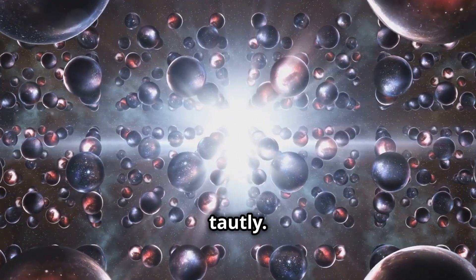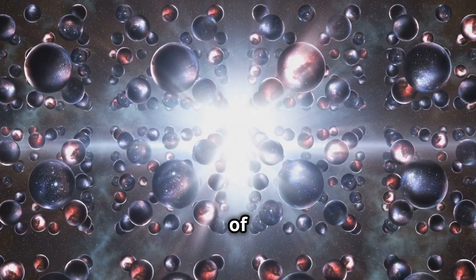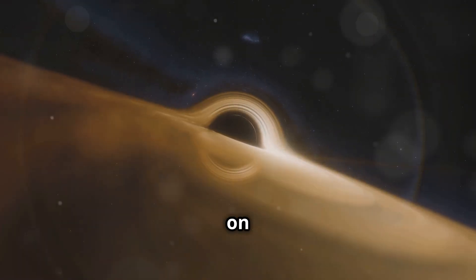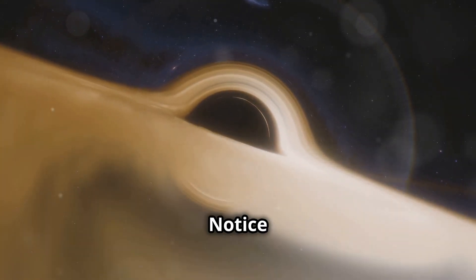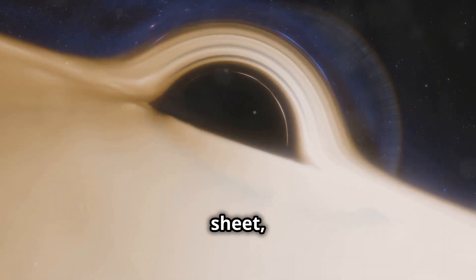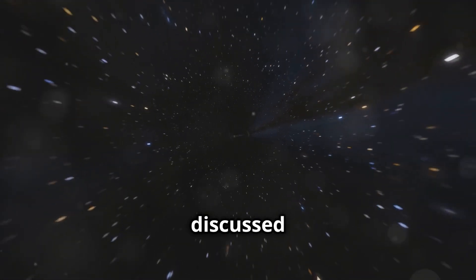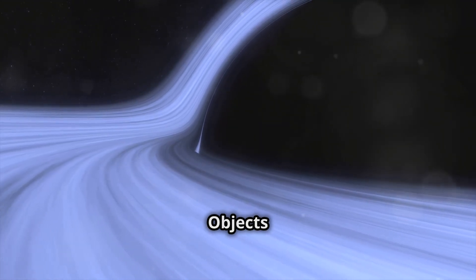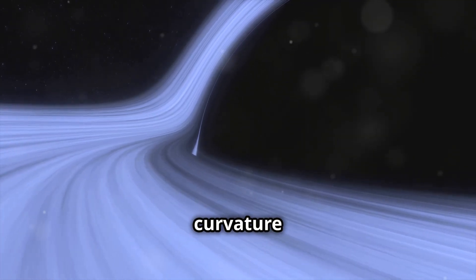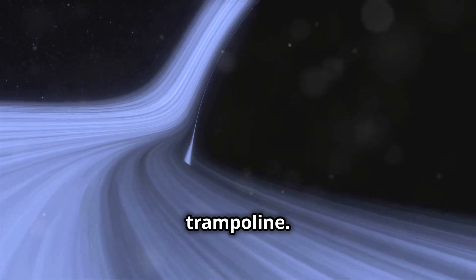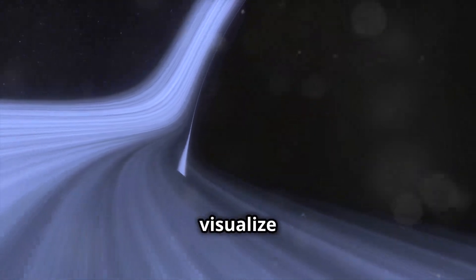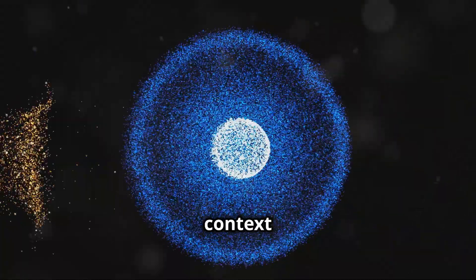Imagine stretching a rubber sheet tautly. This sheet represents the fabric of space-time. Now place a ball on the sheet. The ball represents a massive object, like a star. Notice how the ball creates a dip in the sheet, distorting the fabric of space-time around it. This distortion, as we discussed earlier, is what we perceive as gravity. Objects moving near the star will follow the curvature of the sheet, just like marbles rolling around a bowling ball on a trampoline. This analogy helps us visualize how gravity works in the context of space-time.